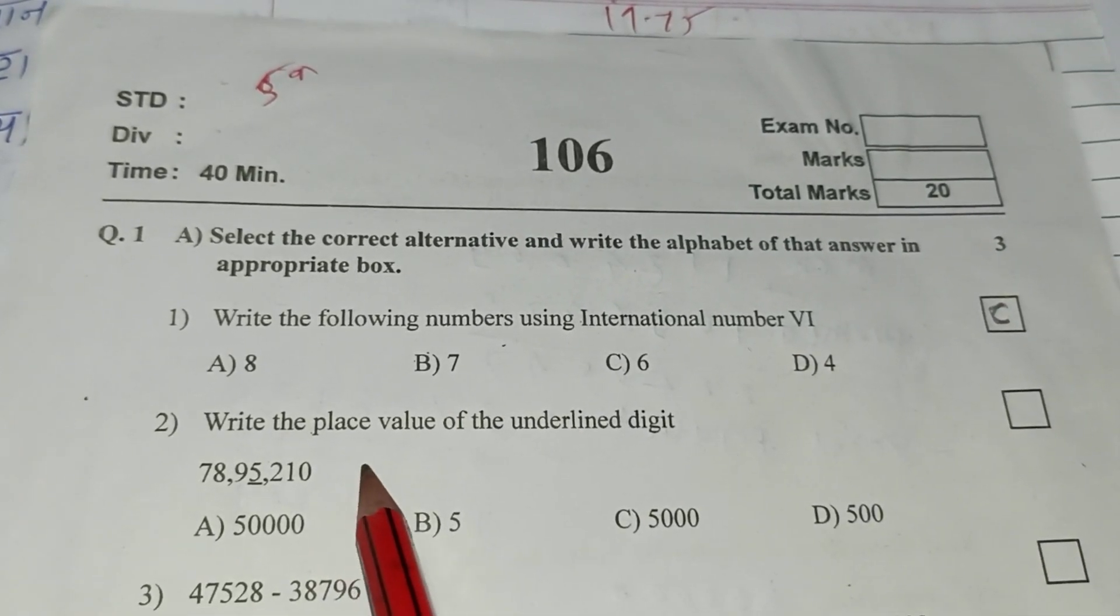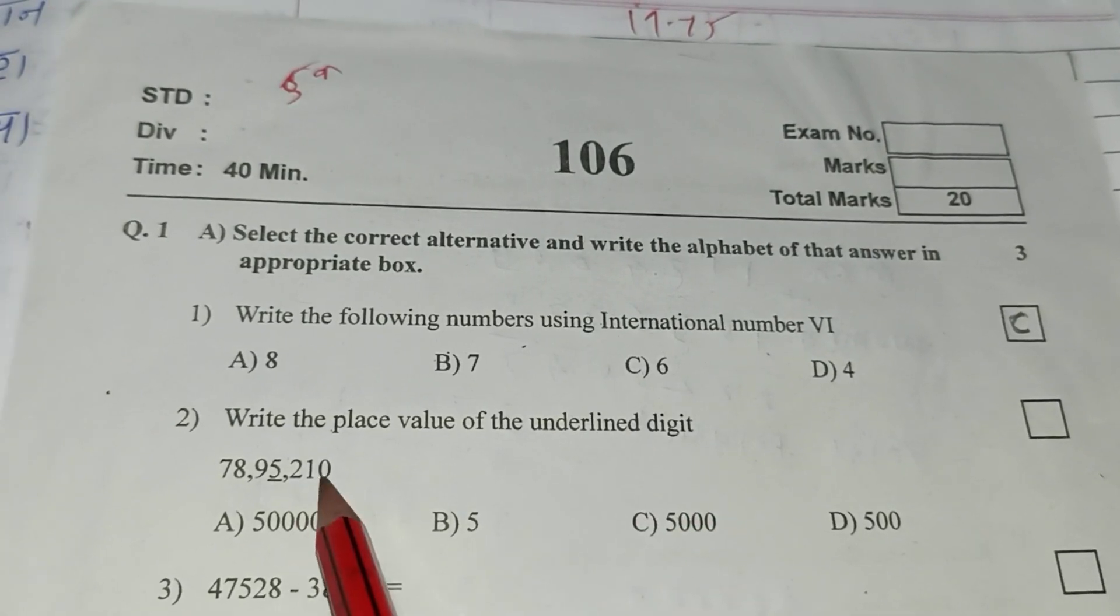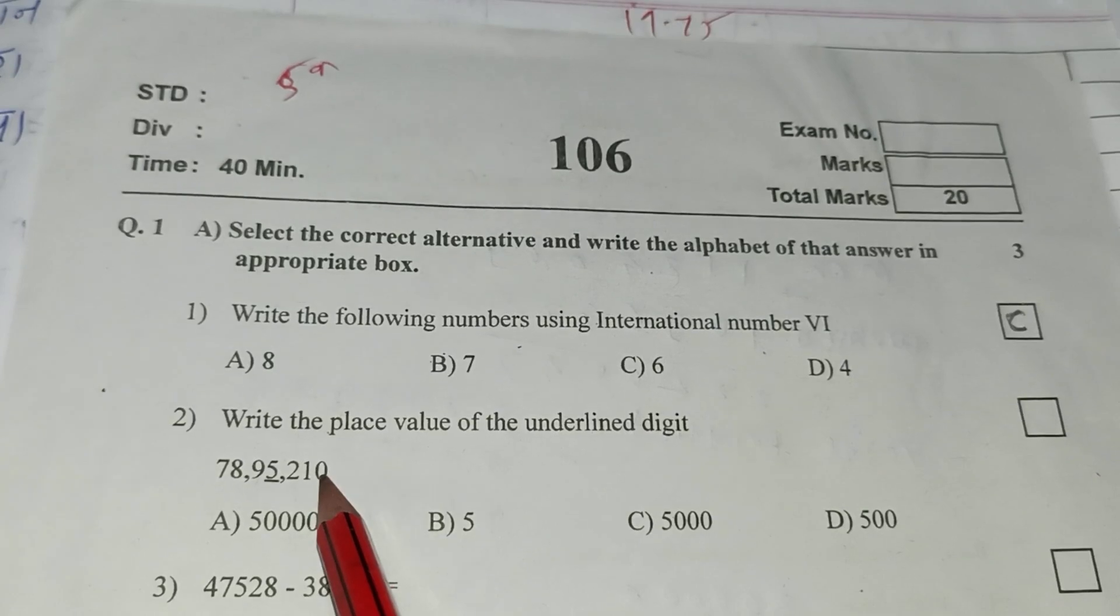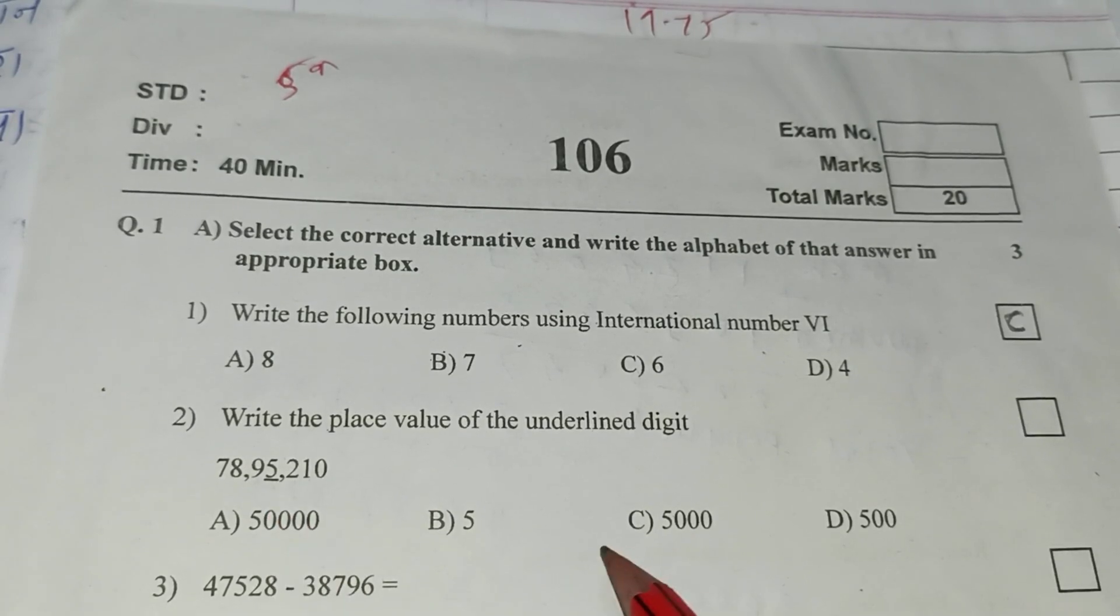Then second, write the place value of the underlined digit. Unit 10, 100, 1000. That means 1000 into 5, 5000.